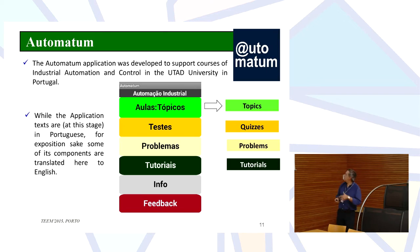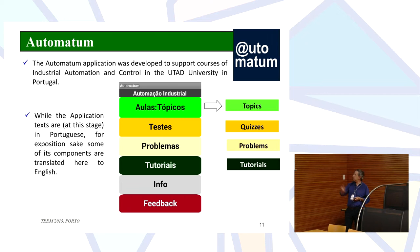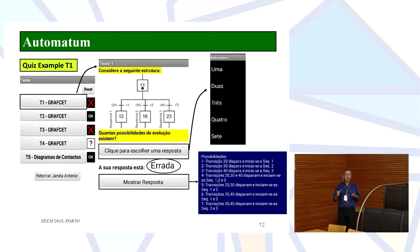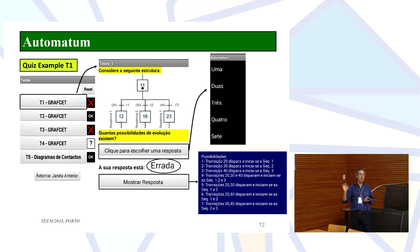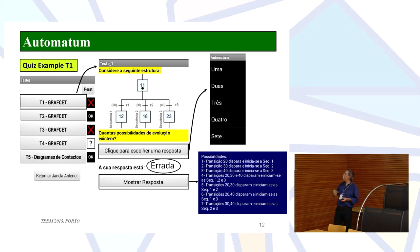The next application I call Automaton — it is a more complex and elaborate application where I provide several things: topics for the classes, some quizzes, problems, tutorials, and some information. This is in Portuguese. I tried to see how I can adapt the easy tutorials from App Inventor to my own purpose. For instance, I put some quizzes where students have some questions and can test if they know how to solve a problem — for instance, given a graph state structure, what are the possibilities of evolution? There are several options and they can try and see if the answer is right or wrong, and also see the answer.